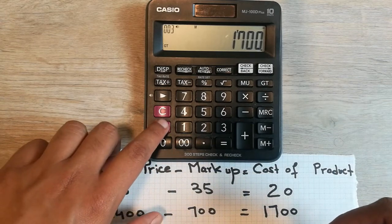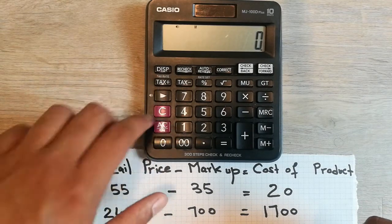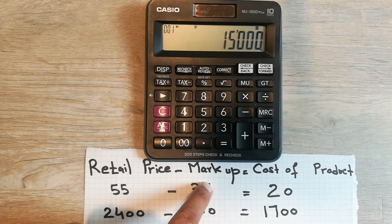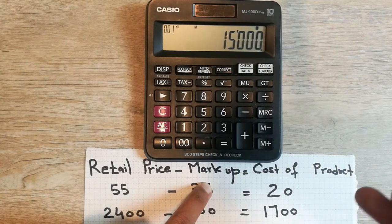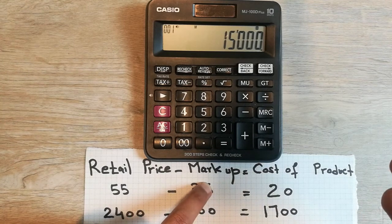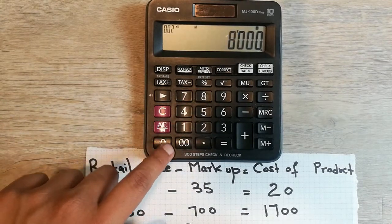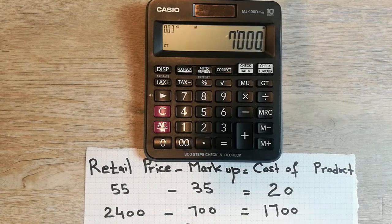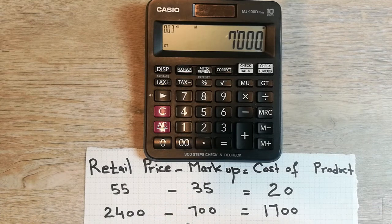Let's move to one more example. The retail price of the item is 15,000. The markup: profit is 7,000 and operational cost is 1,000, so total markup is 8,000. So 15,000 minus 8,000 gives you 7,000. So 7,000 is the cost of the product — the price you purchase from the wholesale market. It does not include profit or operational cost; it's the basic price you pay as a trader.